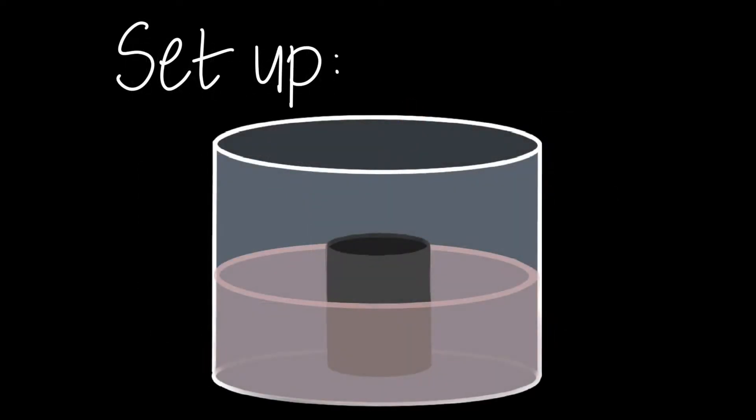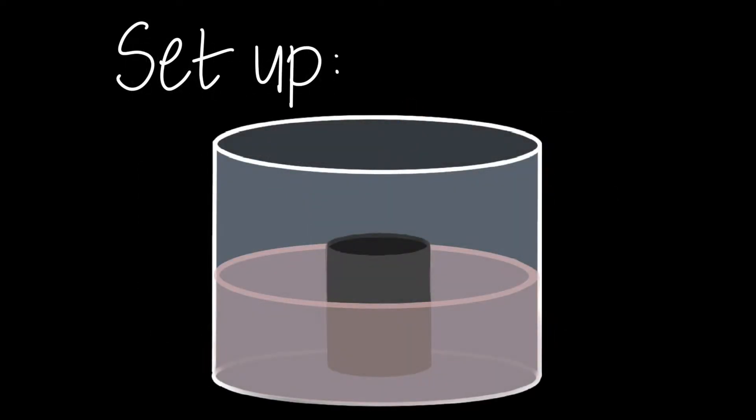We set up this experiment by situating an empty can in the center of a tank and allow the tank to spin up for about 10 minutes with fast rotation. This fast rotation is important in causing these instabilities to occur.